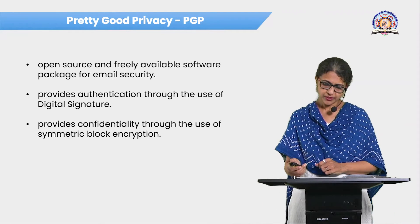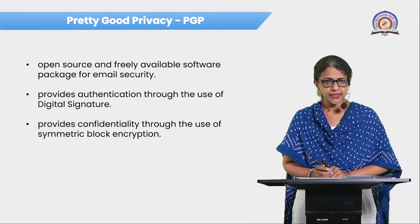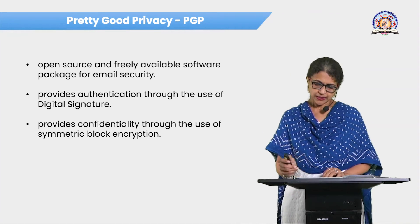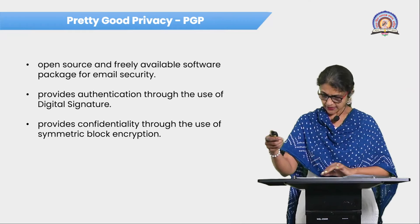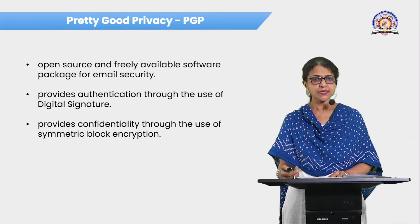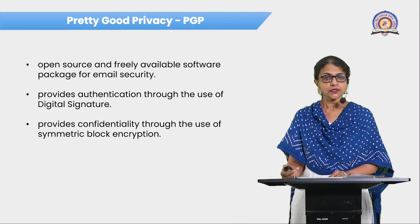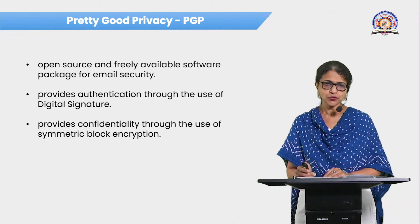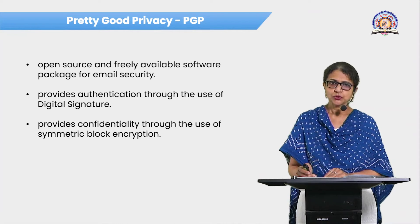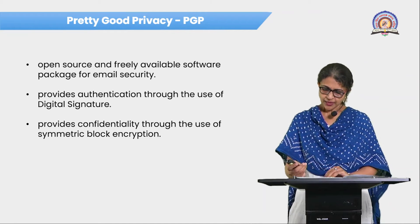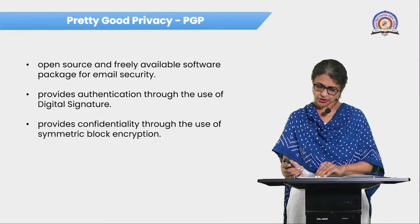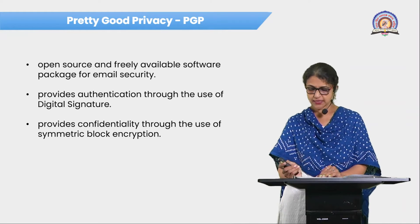PGP is an open source and freely available software package for email security. It was invented by Phil Zimmermann. It provides authentication through the use of digital signatures, giving all four basic security aspects: integrity, non-repudiation, authentication, and privacy. It also provides confidentiality using symmetric block encryption, and can do compression using ZIP algorithms.